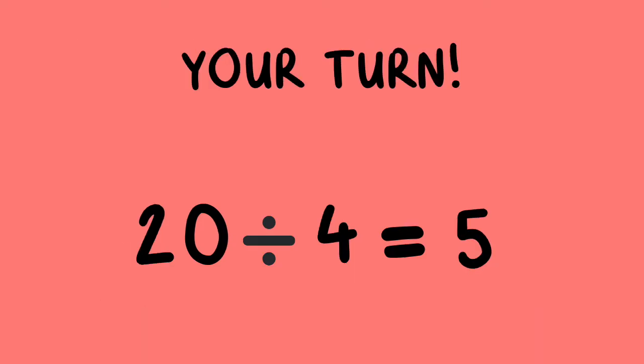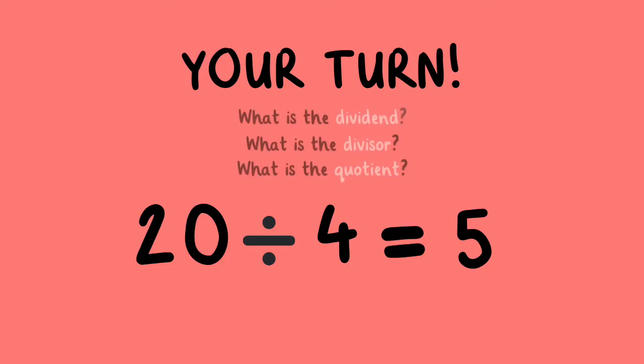Your turn. 20 divided by 4 equals 5. What number is the dividend? What number is the divisor? What number is the quotient?